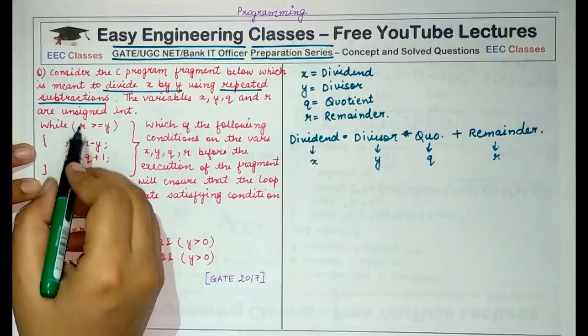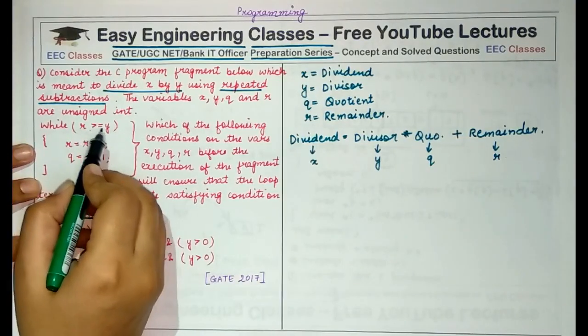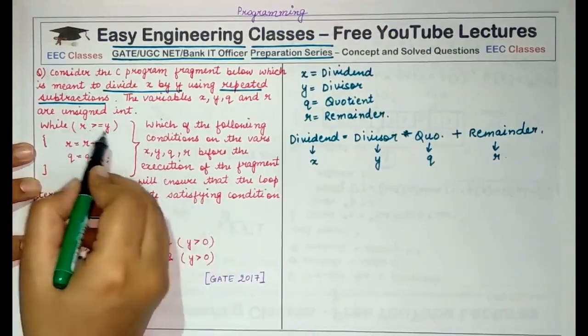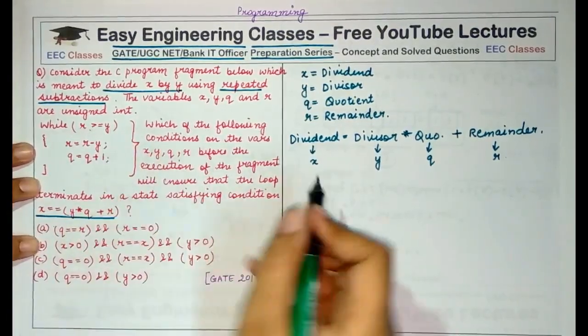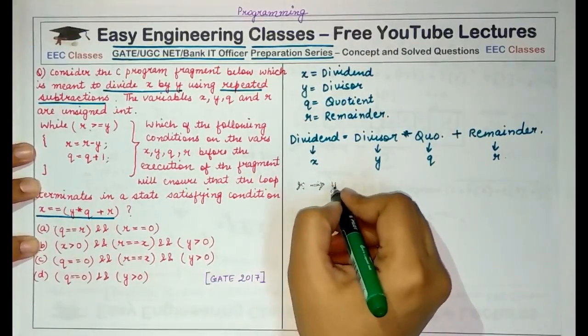So what this loop is doing, as long as the remainder is greater than or equal to the value of Y, that means this statement clearly indicates that R is initialized to the value of X.